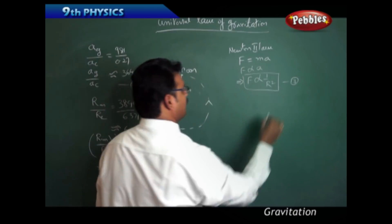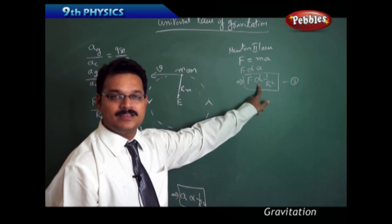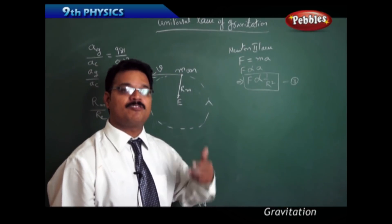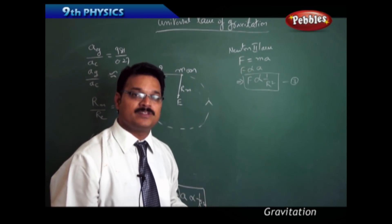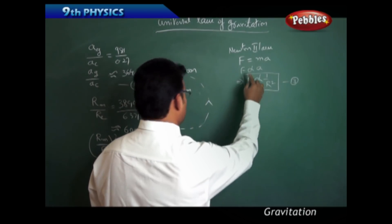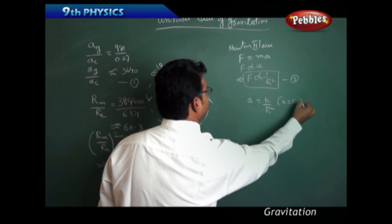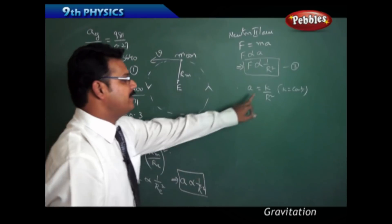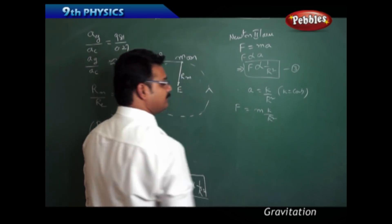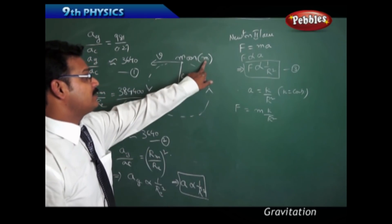This is expression 3: force is inversely proportional to the square of the radius. When the radius increases, force decreases, and when the radius decreases, force increases. This is correct — when you move away from the earth, the gravitational force decreases. Since a ∝ 1/r², we write a = k/r² where k is a constant. From F = ma, we get F = mk/r², where m is the mass of the moon.